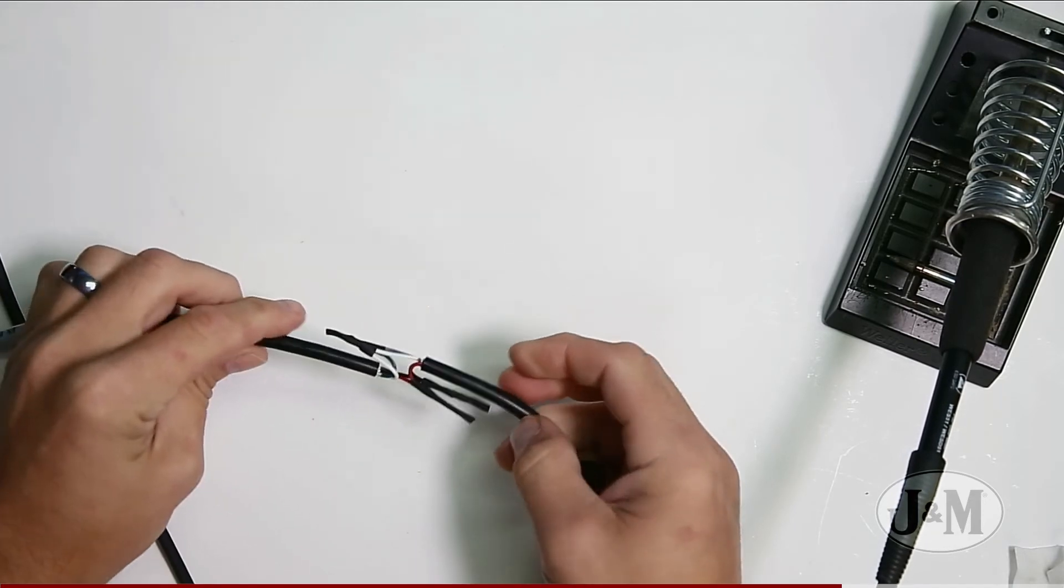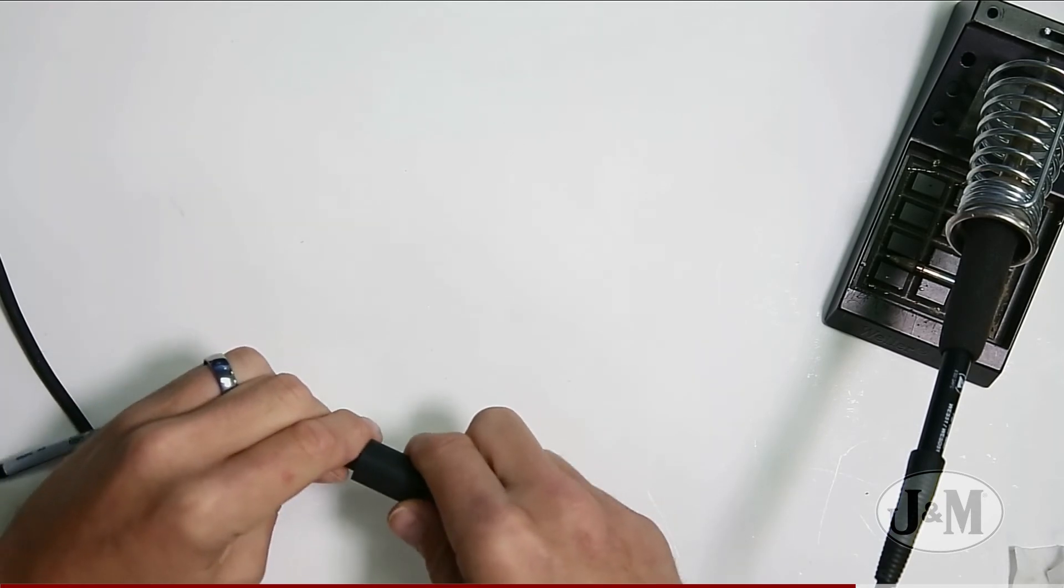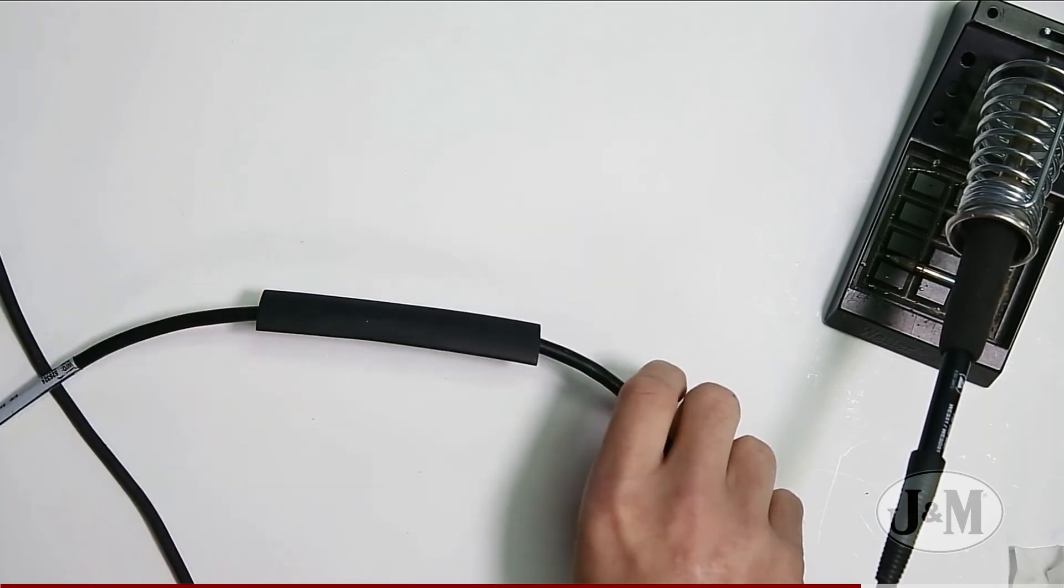And then afterwards what I do is I bend back the two wires like that. I slip over the big three quarter inch on top. And then we are just going to heat shrink this.